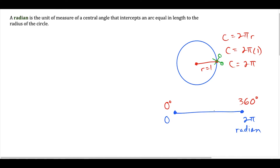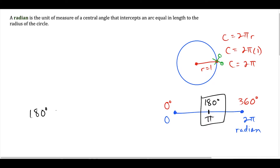From here, if I cut this line in half, 2π divided by 2 is just π. And if I cut 360 degrees in half, I get 180 degrees. So we can say that 180 degrees is equal to π radians. This is actually the relationship that is most helpful and will allow us to convert from radians to degrees and from degrees to radians.